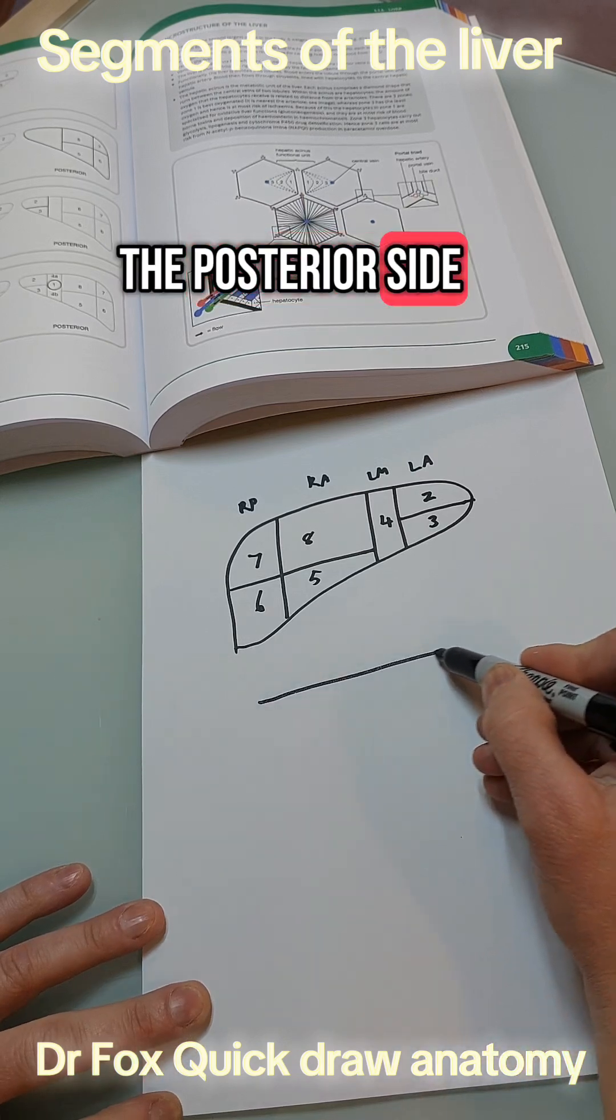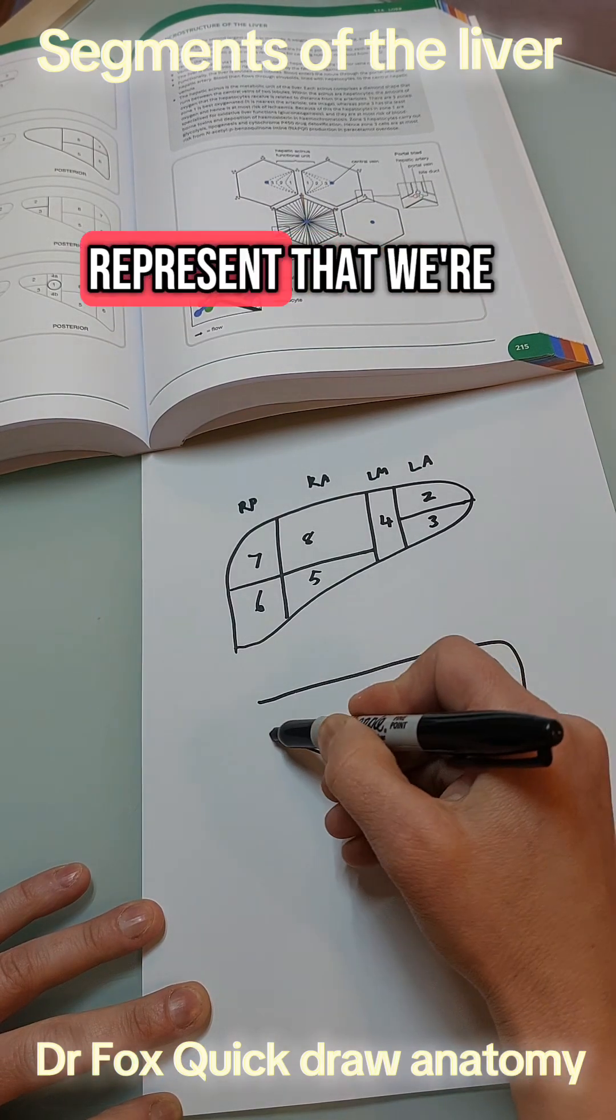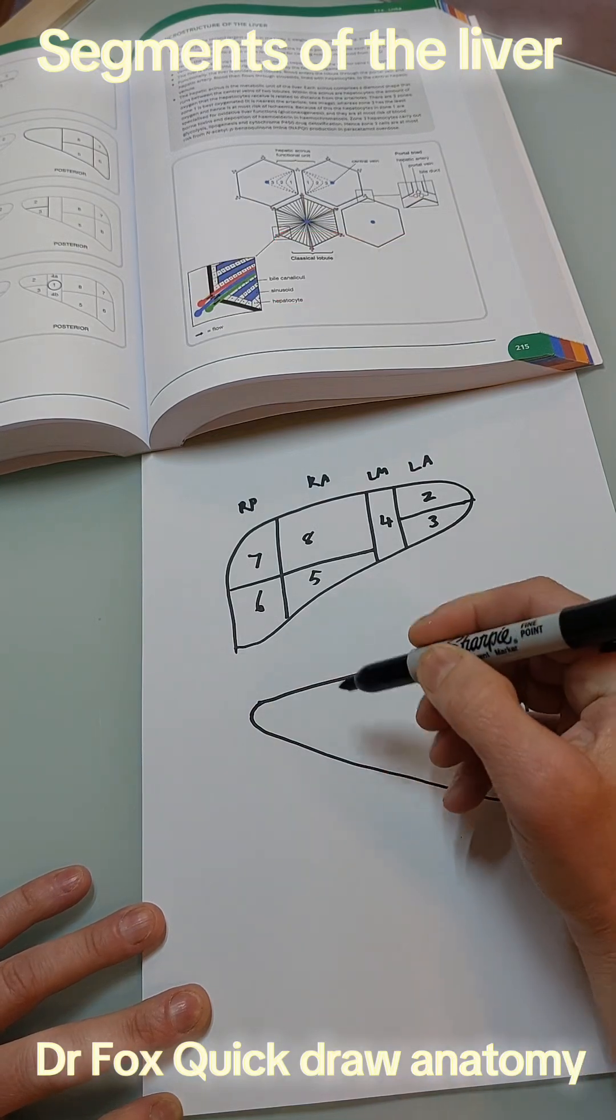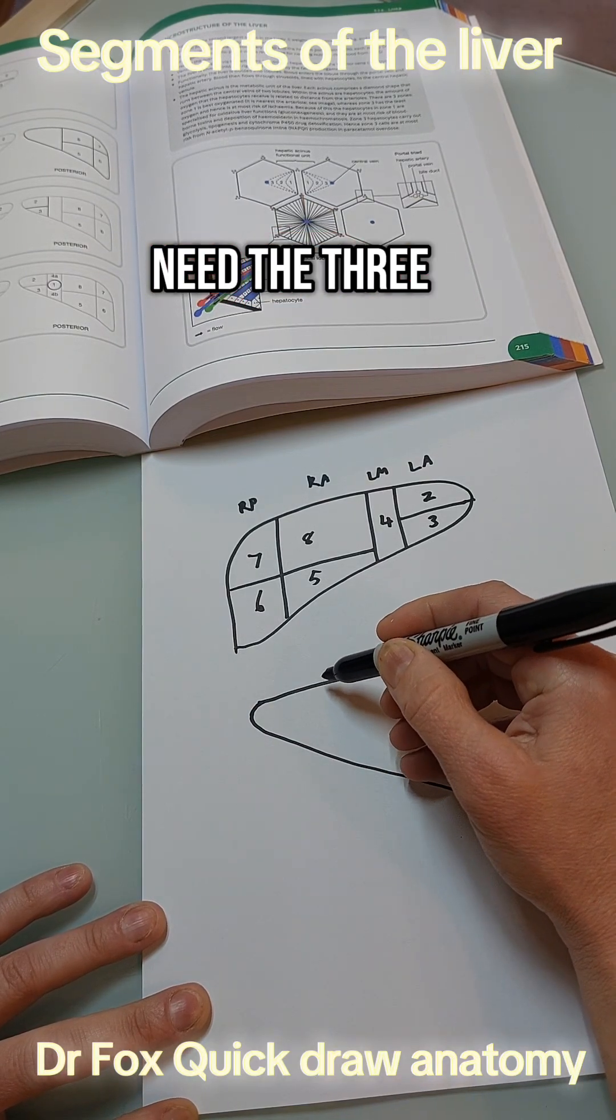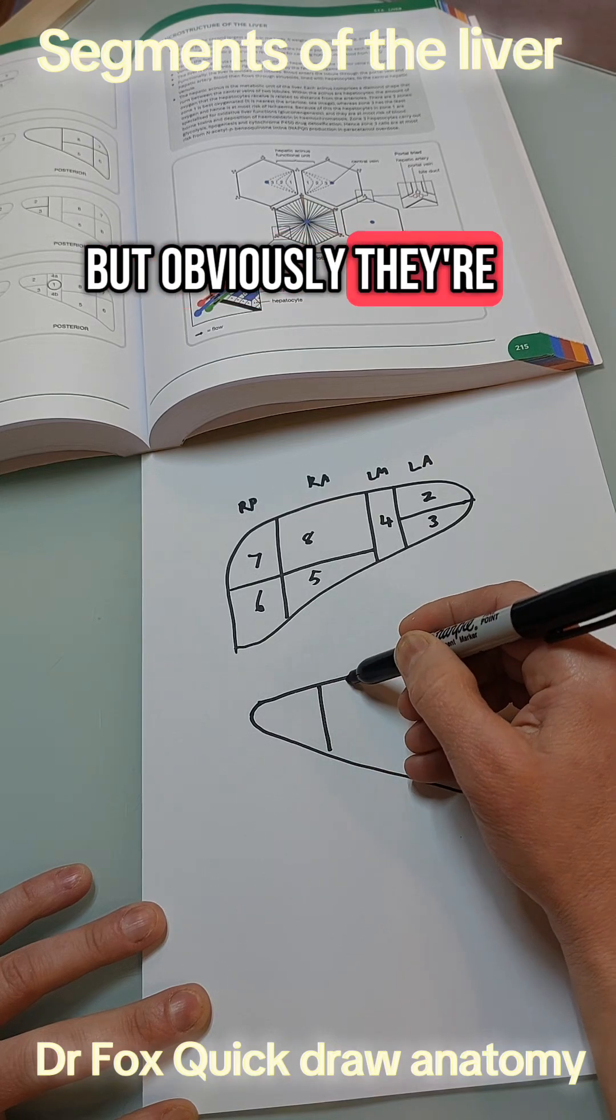So then for the posterior side we draw it the opposite around to represent that we're looking at it from behind and again we need the three main lines in but obviously they're the other way around.